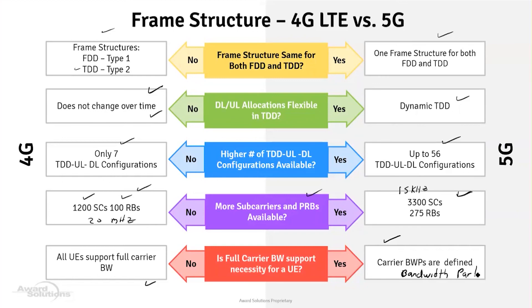Bandwidth Parts - BWP - allow an operator to subdivide a carrier. For example, with a 100 MHz wide carrier, half could be subdivided for consumer use with a numerology suited to eMBB - over-the-top video - and the other half configured to support Ultra Reliable Low Latency Communications. This ability to configure different portions of the carrier for different service types is a significant difference between 5G and 4G.